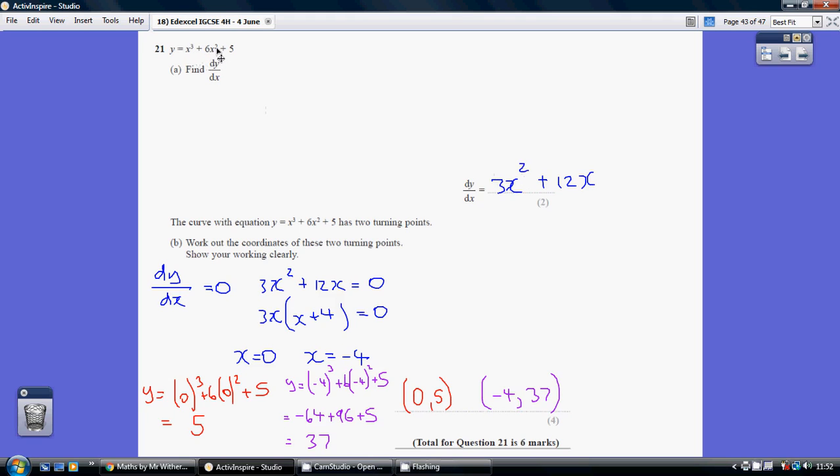Similar with the second term, multiply by the current power, which is 2, 2 times 6 is 12, and reduce the current power by 1. So not x squared, but just x.